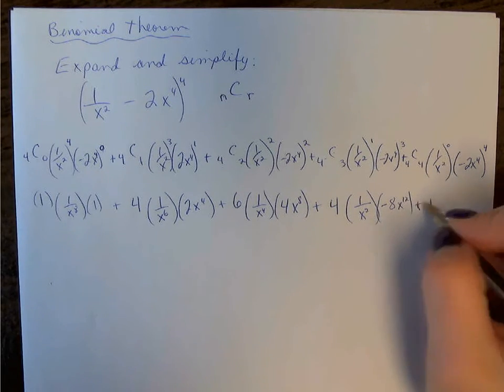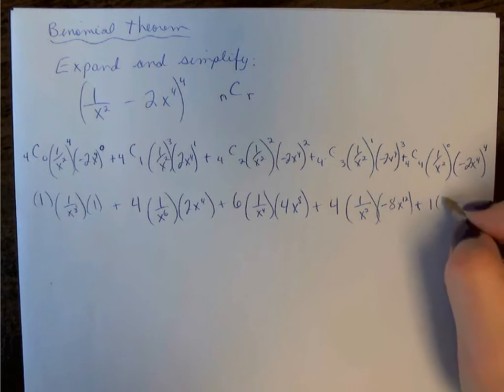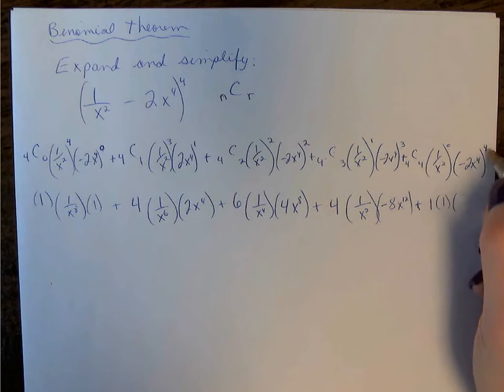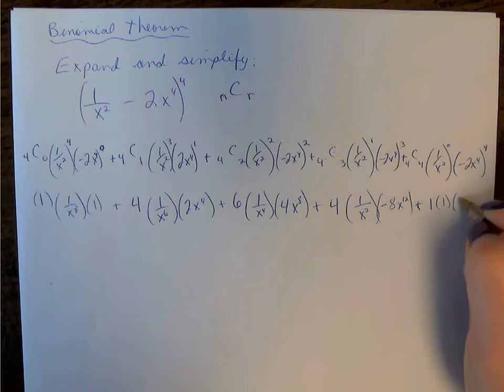4C4 is 1, anything to the 0 is 1, -2 to the 4, we have an even exponent, so we're going to have positive 16x to the 16.